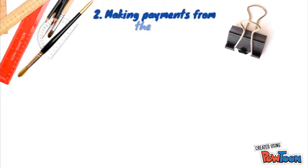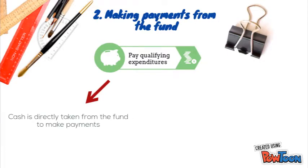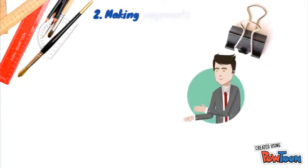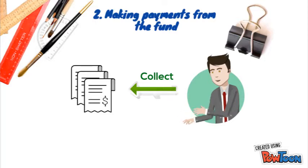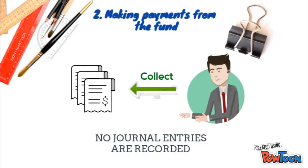After establishing the fund, cash is used to make payments for qualifying expenditures in two different ways. Cash is directly taken from the fund to make payments, or employees can seek reimbursement from the fund for payments that they make personally. In both of the ways, Ted has to collect receipts for the use of cash from the fund, as they are required when replenishing the fund. In this step, journal entries are not recorded.